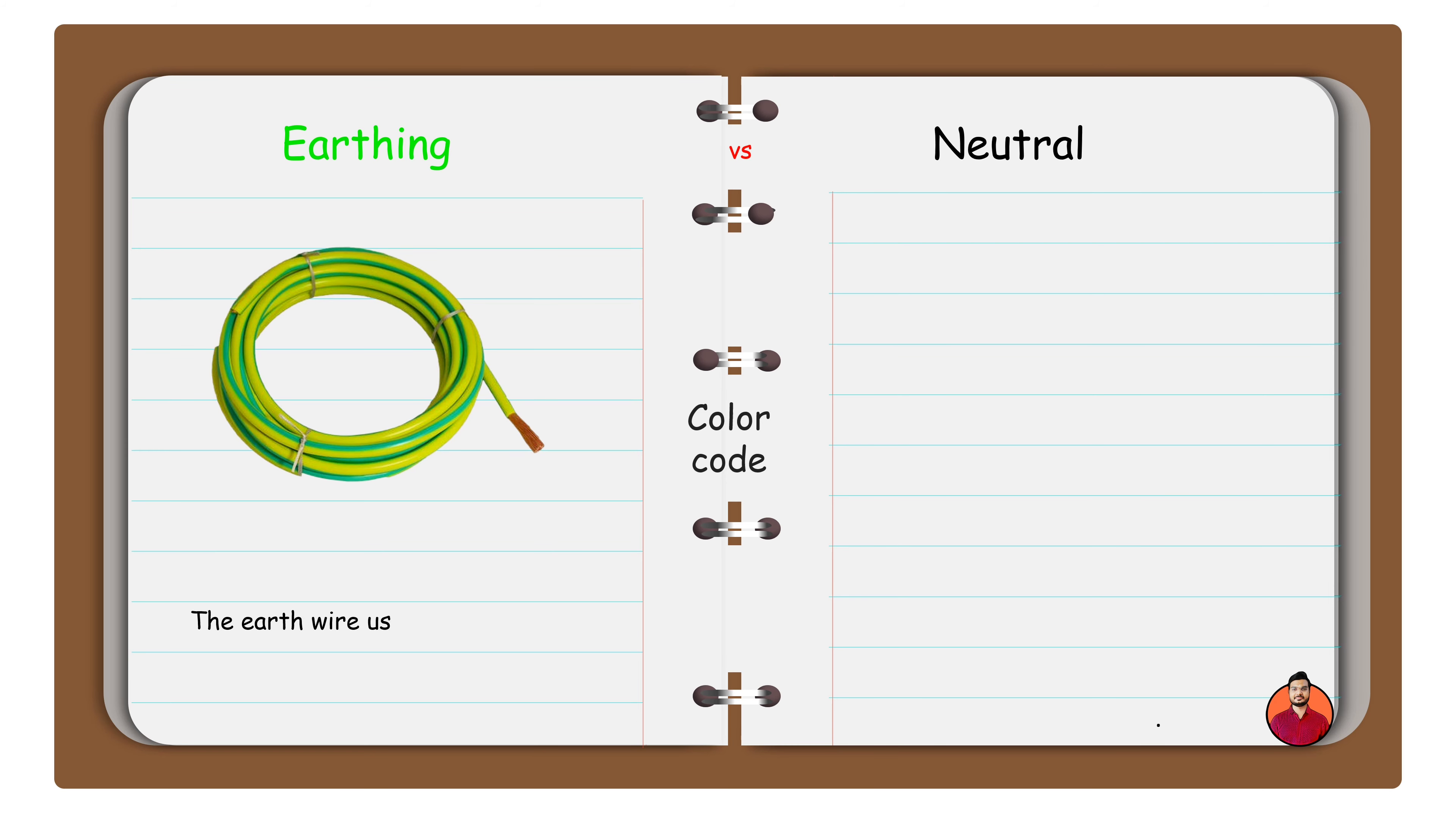The earth wire used is of green color. The neutral wire is of black or blue color.